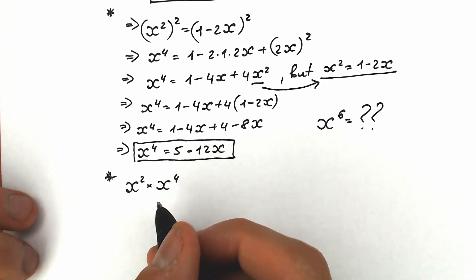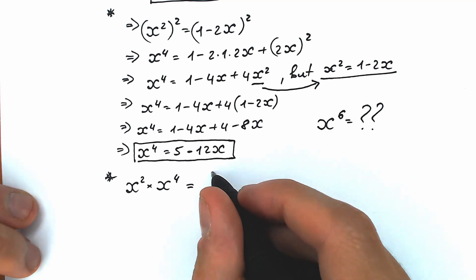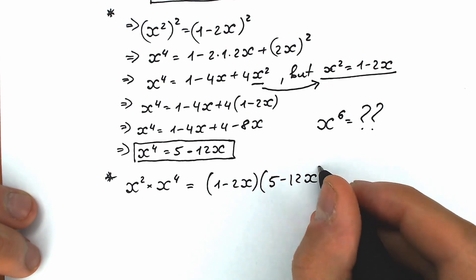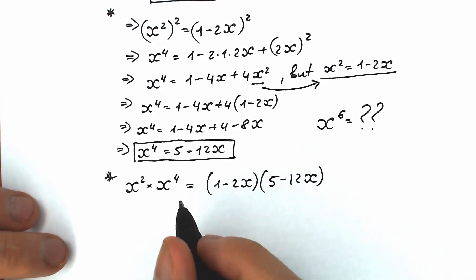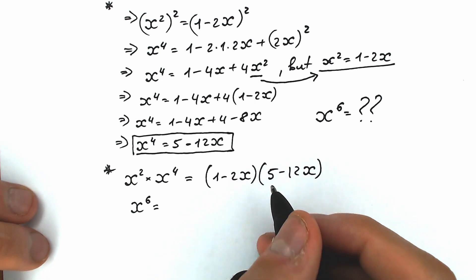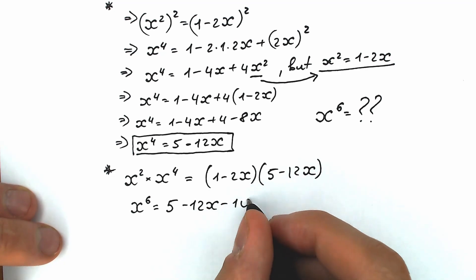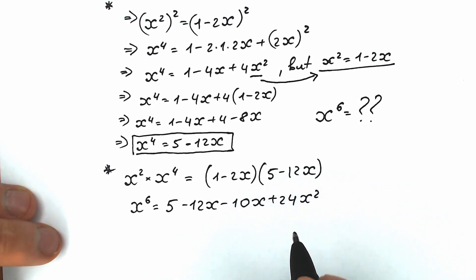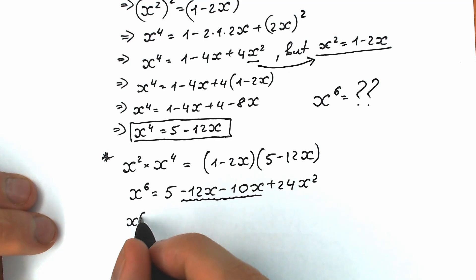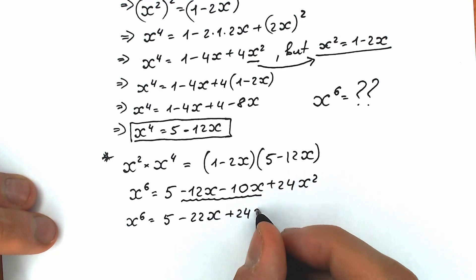So x to the 6th power equals x squared times x to the 4th power, which on the right side means (1 minus 2x) times (5 minus 12x). We multiply the parentheses by each other. So on the left side we have x to the 6th power, and on the right side we multiply to get 5 minus 12x minus 10x plus 24x squared. Combining minus 12x and minus 10x gives minus 22x. So x to the 6th power equals 5 minus 22x plus 24x squared.